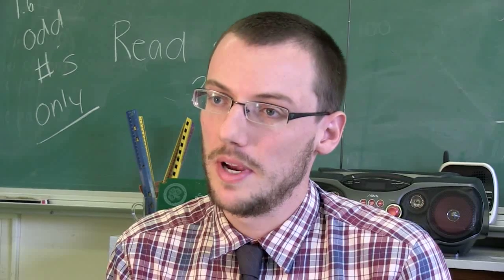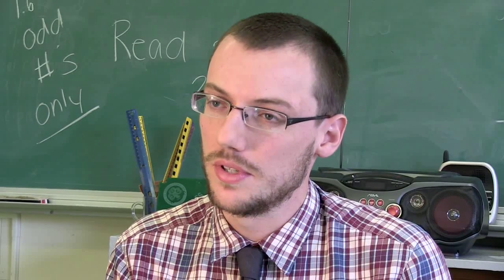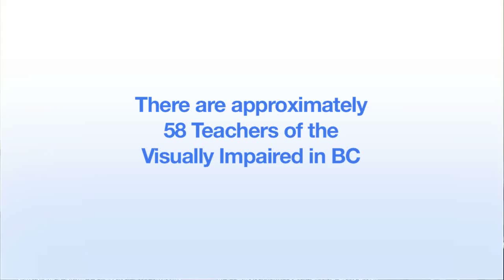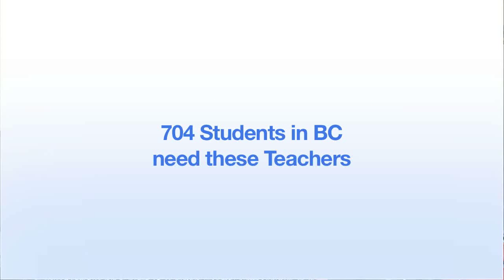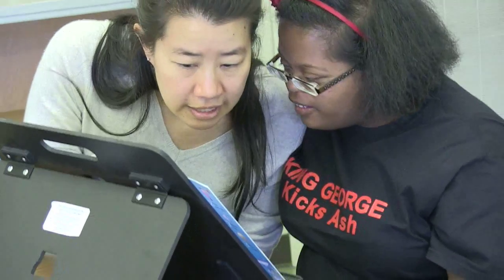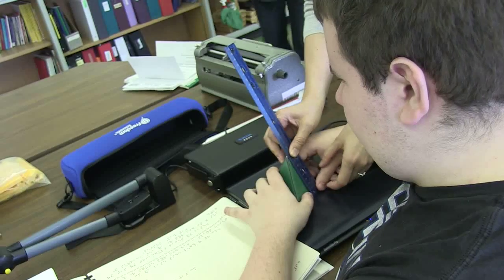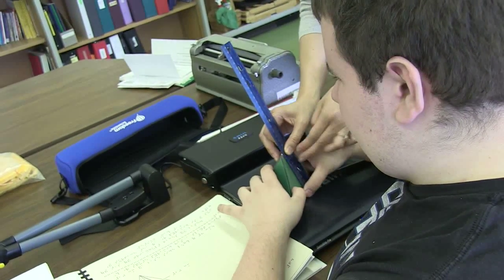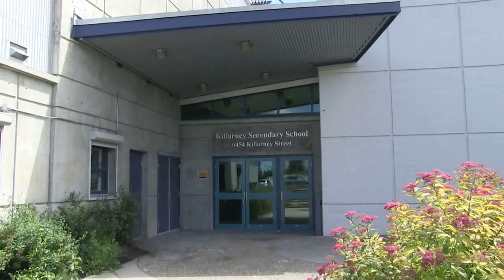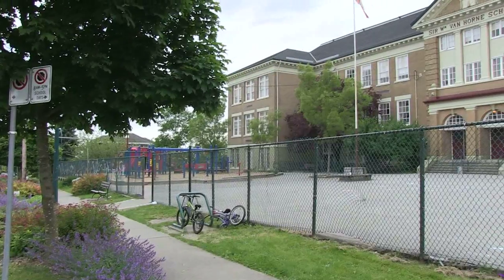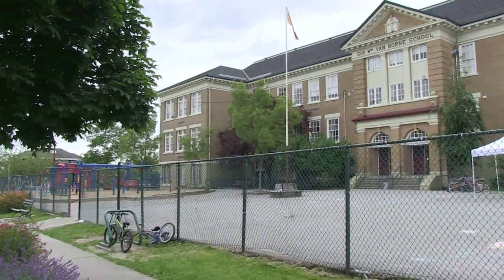I know that most students with visual impairments are integrated into their neighborhood schools. How does this work? Does each school have a TVI? In BC, all students with visual impairments are placed in the neighborhood school. The Ministry of Education requires that a qualified teacher of the visually impaired support these students' programs. It's the responsibility of each school district to ensure that this specialized education is provided. The vision teacher is normally employed by the district and assigned a caseload of students from various schools, traveling from school to school to visit these students on a regular basis.